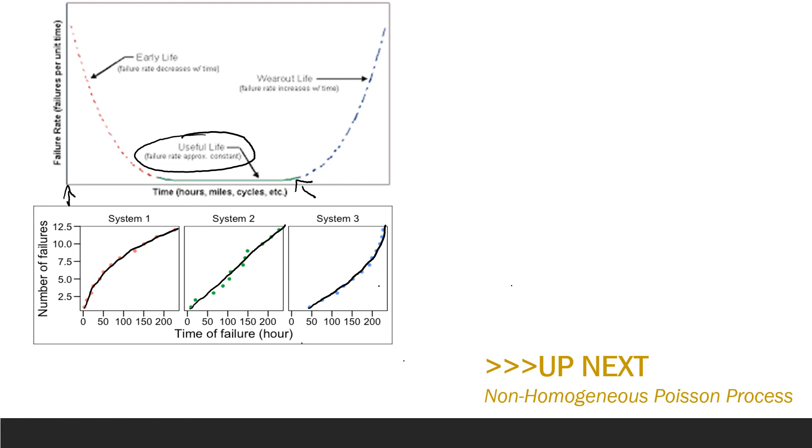In the next module we talk about how to generalize the HPP to a new model that can account for improvements in the system, which we call the non-homogeneous Poisson process. The next module goes into detail about changing rate of failure as we perform repairs on our system.